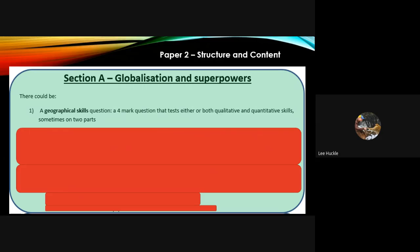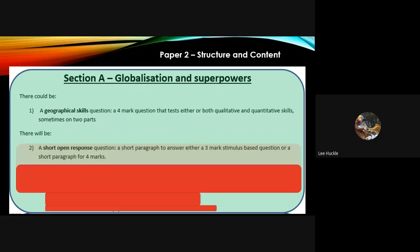What we know for sure is there will be a short open response question, either a three marker or a four marker, based on some sort of stimulus. As I always say, a map, a graph, a table of data, a diagram—something that you're going to have to refer to and use in your answer.